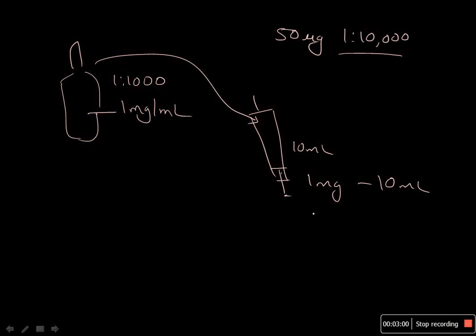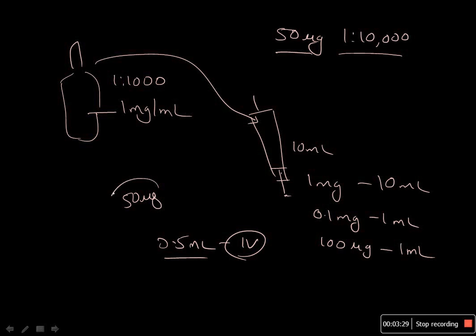So 1 mg in 10 ml, or you can write this as 0.1 mg in 1 ml, or you can also write this as 100 micrograms in 1 ml. If you want to give 50 micrograms, you simply push 0.5 ml of this syringe IV—that would give 50 micrograms at dilution 1:10,000.